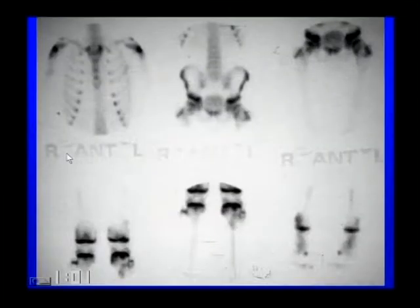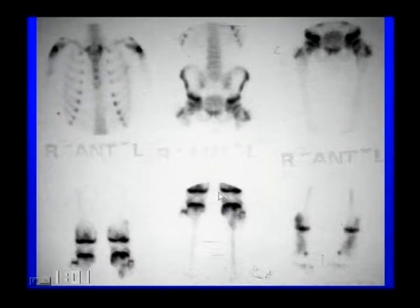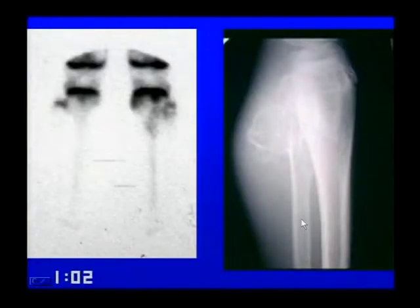In a skeletally immature patient, multiple foci of mildly increased activity located at the physis and pointing away from the physis describe multiple hereditary exostoses. On a lateral spot view, the exostoses project outward. This description alone — physeal location, pointing away — should be sufficient to make the diagnosis.